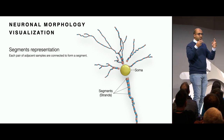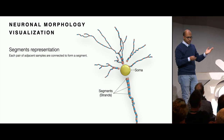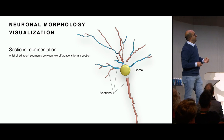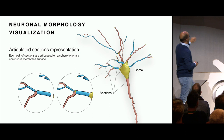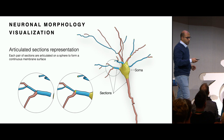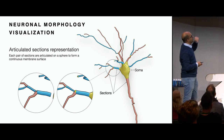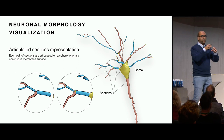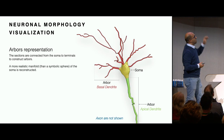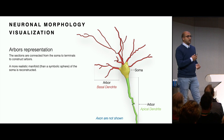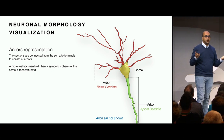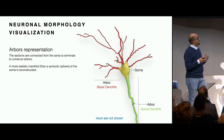If we connect the samples together we end up having segments, and if we connect the segments between two branches we get sections. Sections might have some gaps between them, so we do something called articulated sections - we integrate spheres between the different branches. Finally, we connect all pieces together to end up with what's called the arbor representation, so we can visualize the neuron completely in 3D.